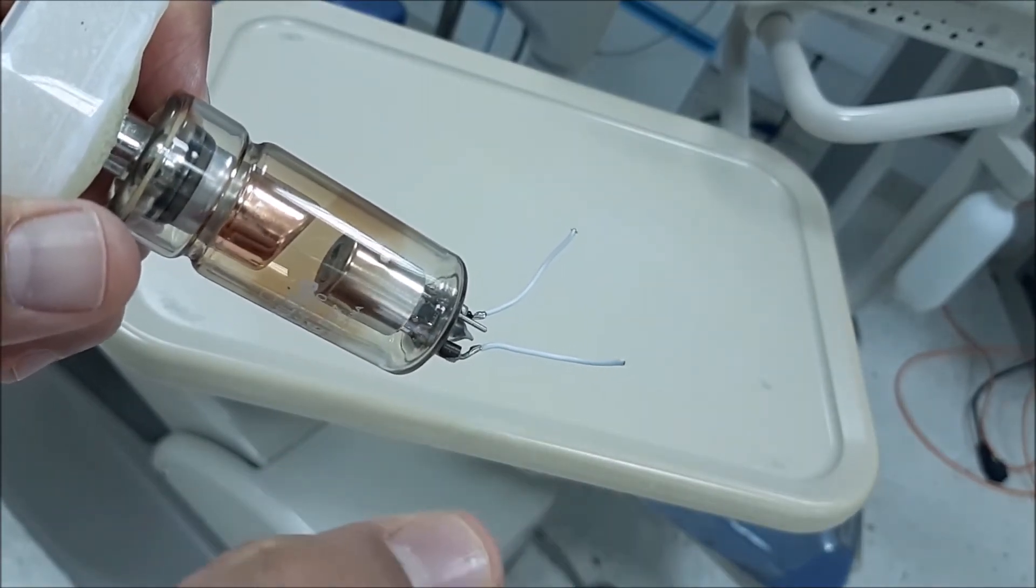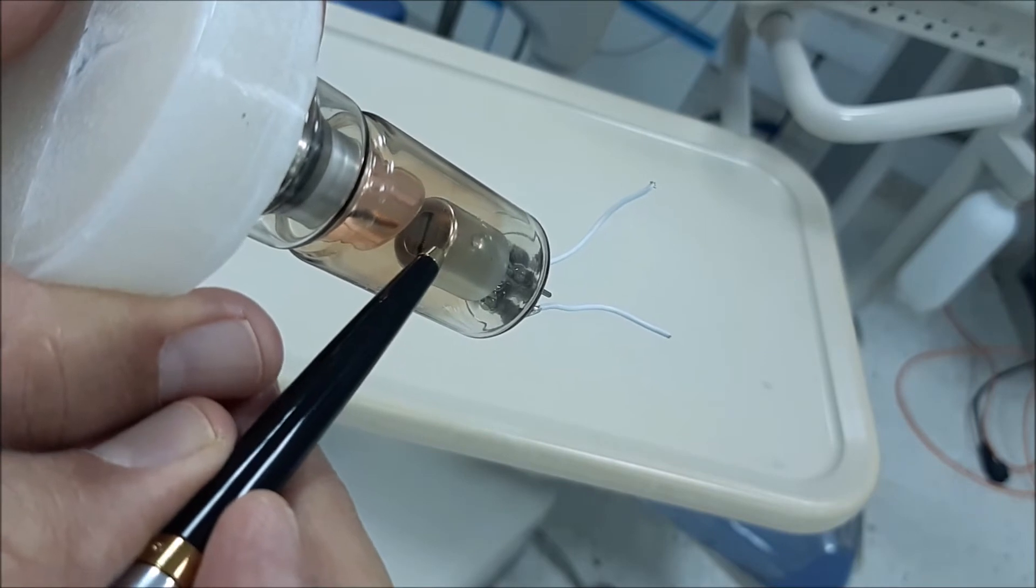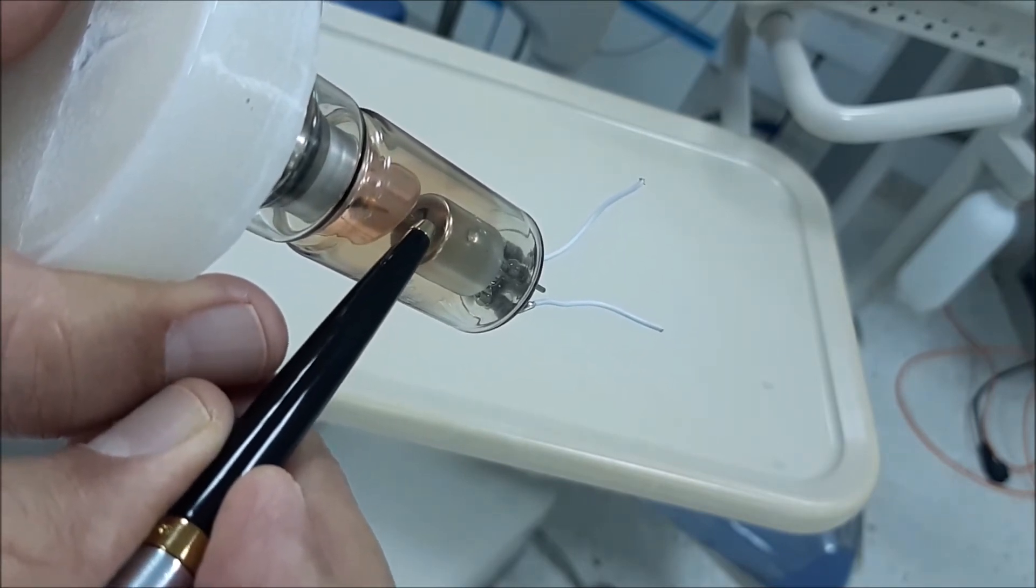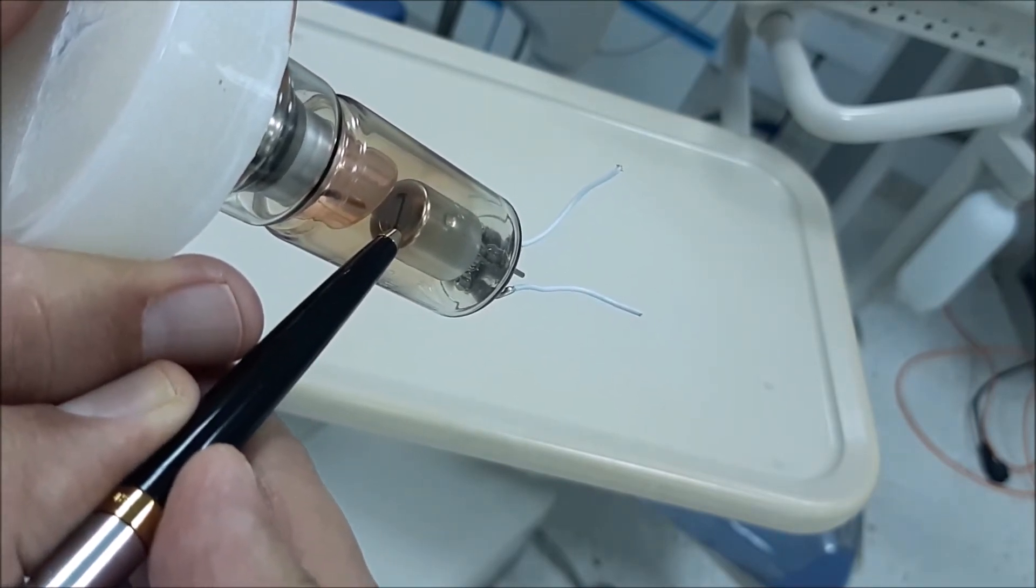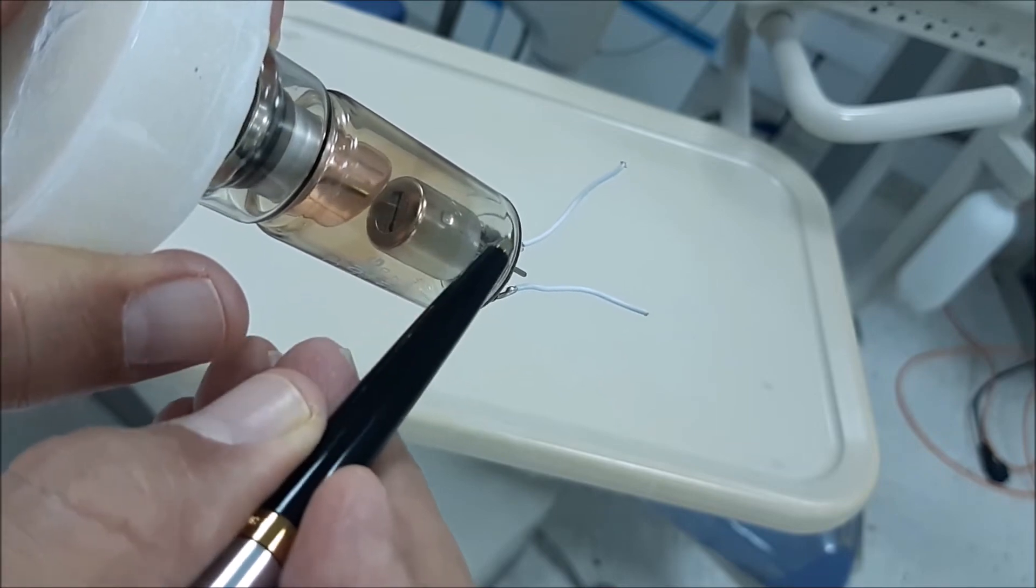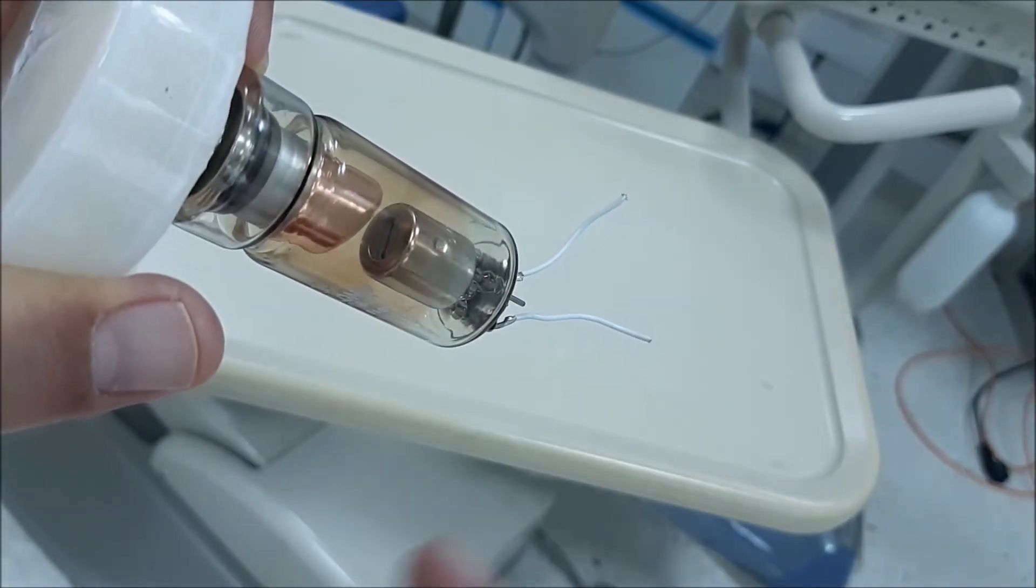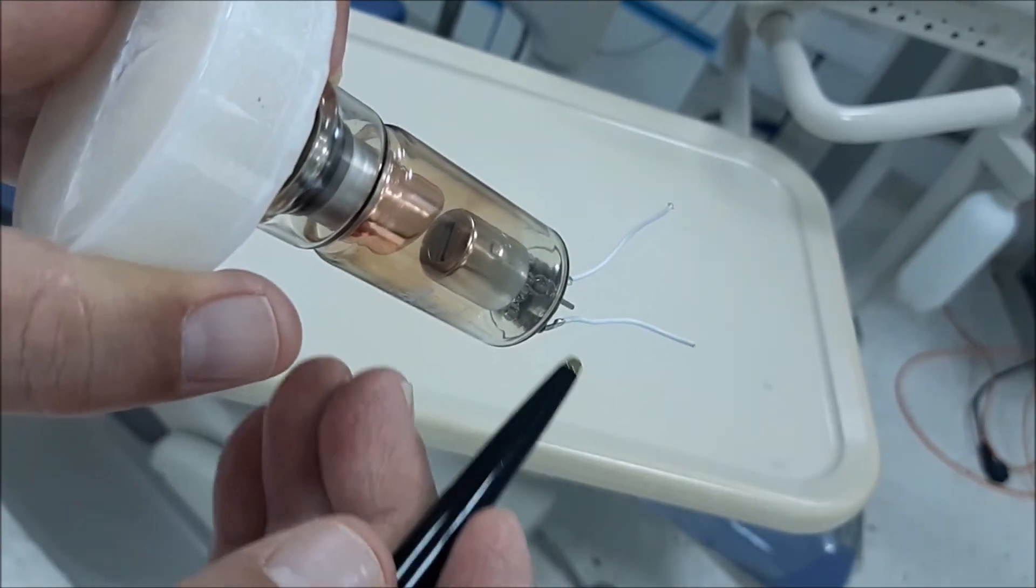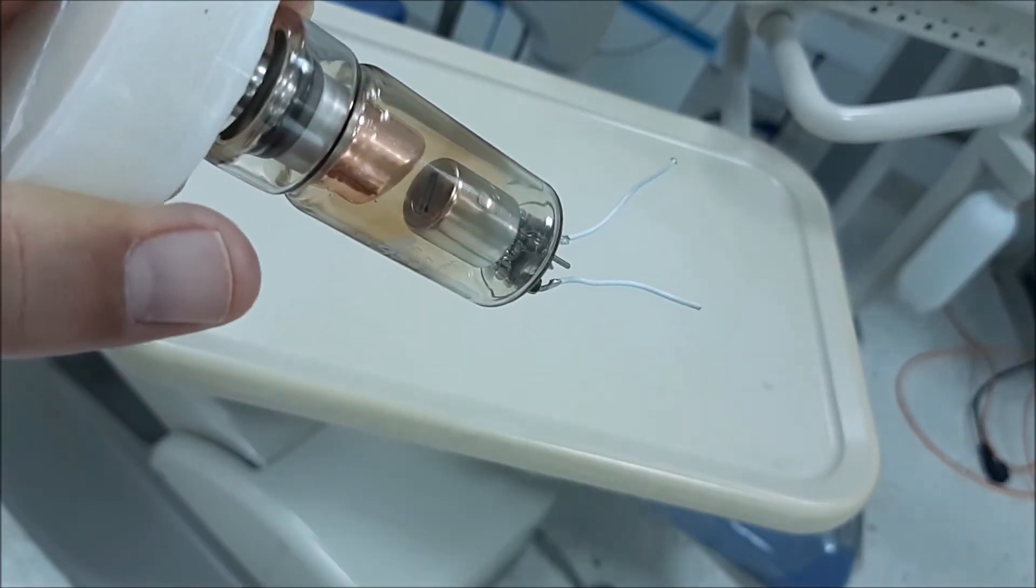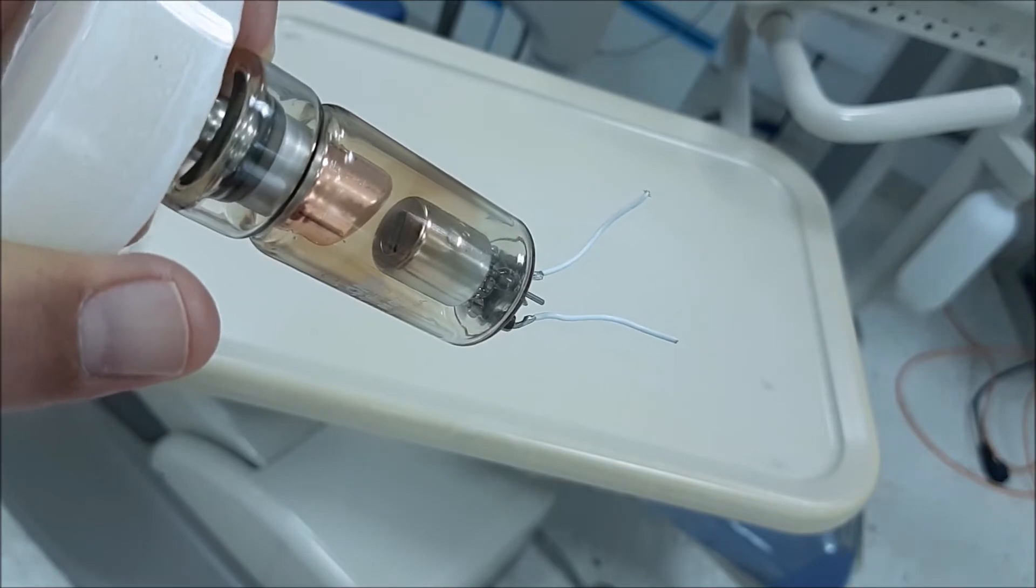So the first step when you start your X-ray machine is you're going to heat up this tungsten filament, which is present inside the cathode, through the step-down transformer.